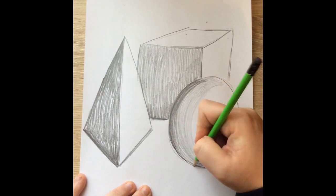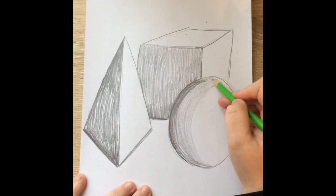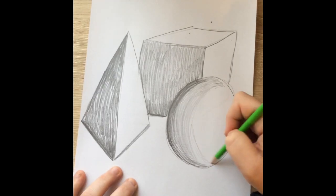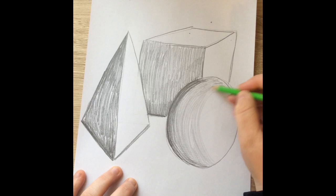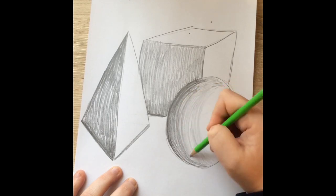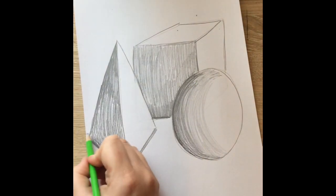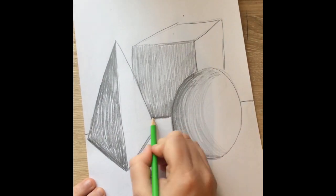Notice it is getting a little bit darker where those shapes start overlapping, so further in and closer to the cube is where it's going to be darker. I'm just putting more pressure on my pencil to create that darker shading.